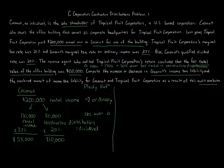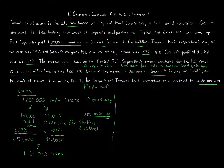If we add up those two amounts — $55,500 plus $10,000 — that equals $65,500 of taxes that Coconut will have to pay under the IRS audit change result. Now, originally, Coconut reported $200,000 of rental income multiplied by 37%, which equals $74,000. That was the old way Coconut reported it.